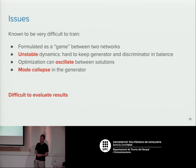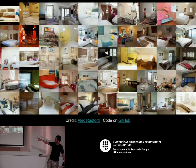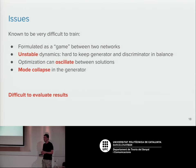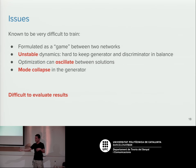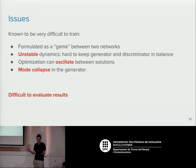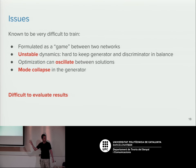Another major problem is mode collapse, which is very common. For example, if trained on MNIST, the generator might always produce the number one — in different orientations, but never any other digit. The discriminator can't really tell the difference because the ones look like real images, so the generator has collapsed to one mode and refuses to generate anything else. There are approaches to prevent this, but it remains a major area of research.